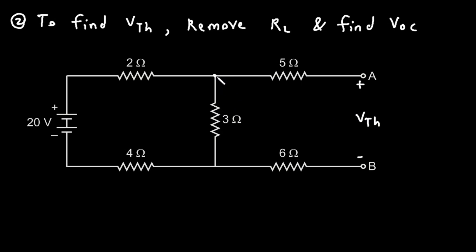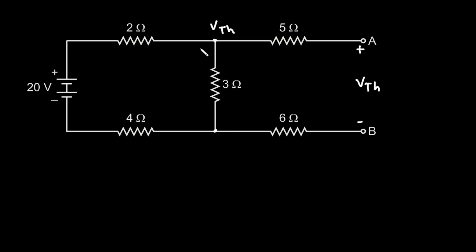Now we can easily find the value of VTH. This voltage, the voltage across this 3 ohm, will be our VTH simply. So here we can write this will be our VTH. So we can use here voltage division rule. By using voltage division rule we can find the value of VTH.